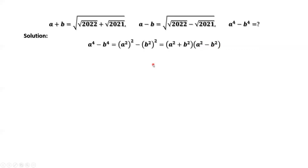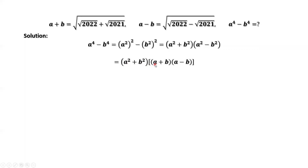It is A squared plus B squared, times A squared minus B squared. We can apply this formula again to A squared minus B squared. Therefore, A to the power of 4 minus B to the power of 4 equals A squared plus B squared, times A plus B, times A minus B.